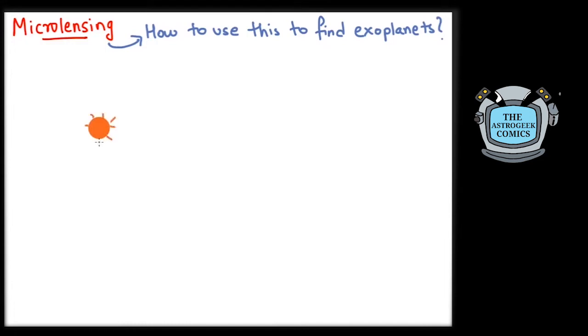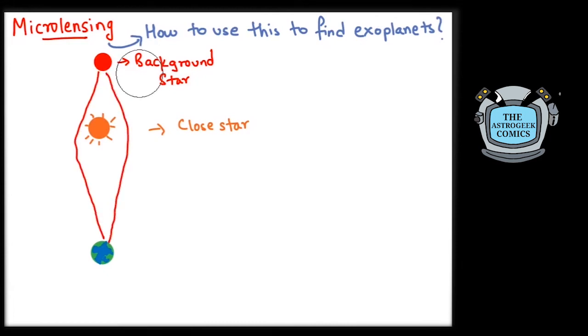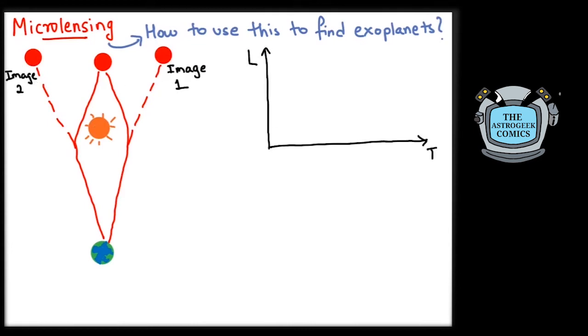We know that stars are moving in space but their movement is not so apparent due to their distance. When a star closer to us appears to pass in front of another star in the background, the gravity of the closer star bends the light of the star in the background. Due to this bending, the light gets distorted and appears to be coming from two sources instead of one and we see a brief rise in the brightness of the background star.